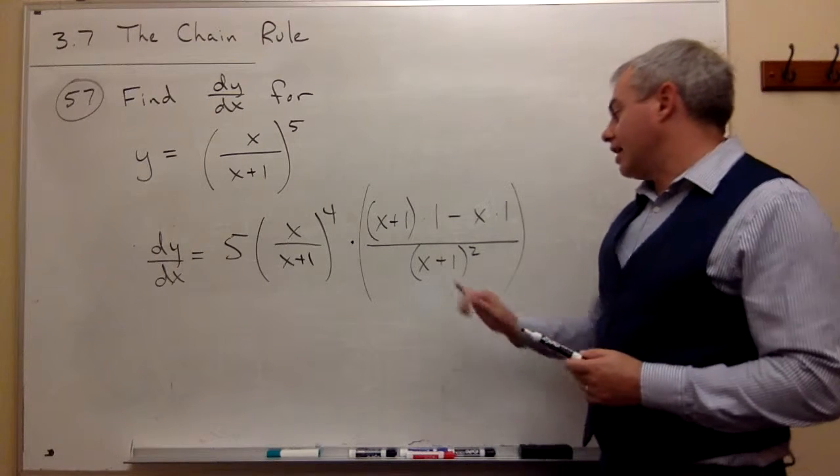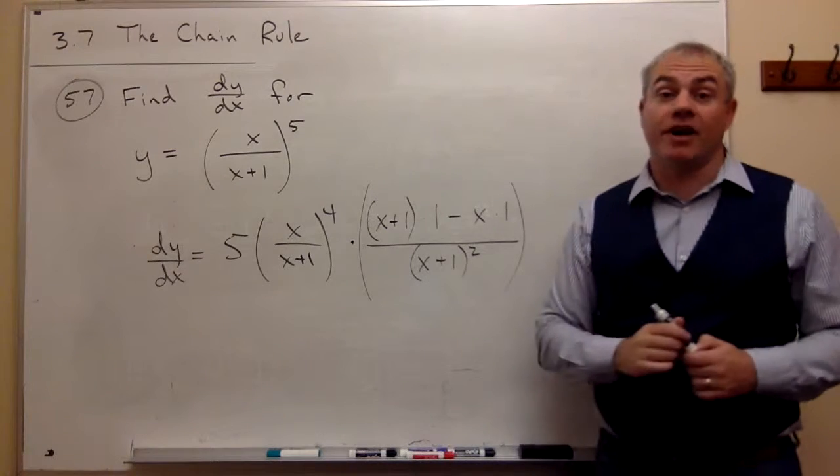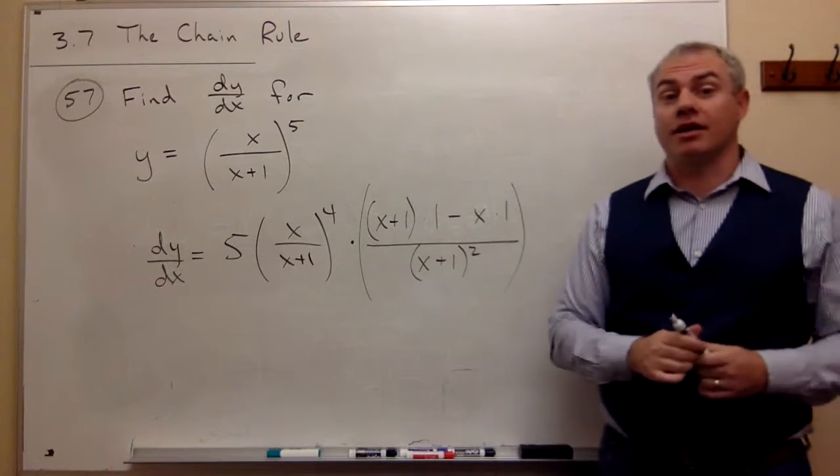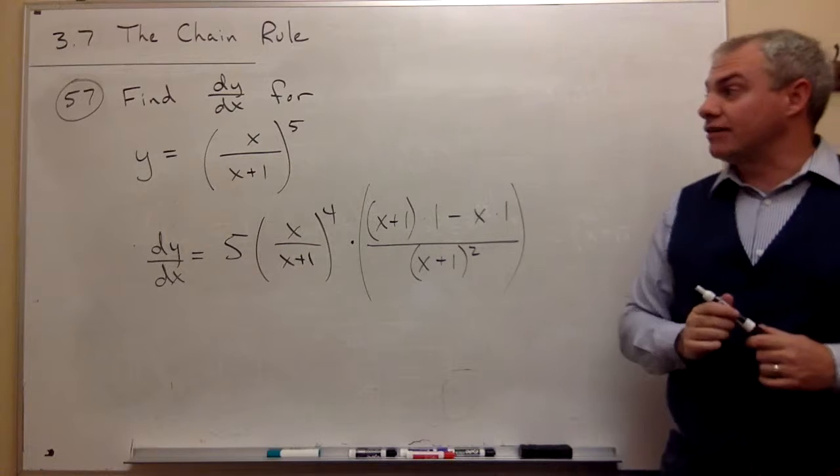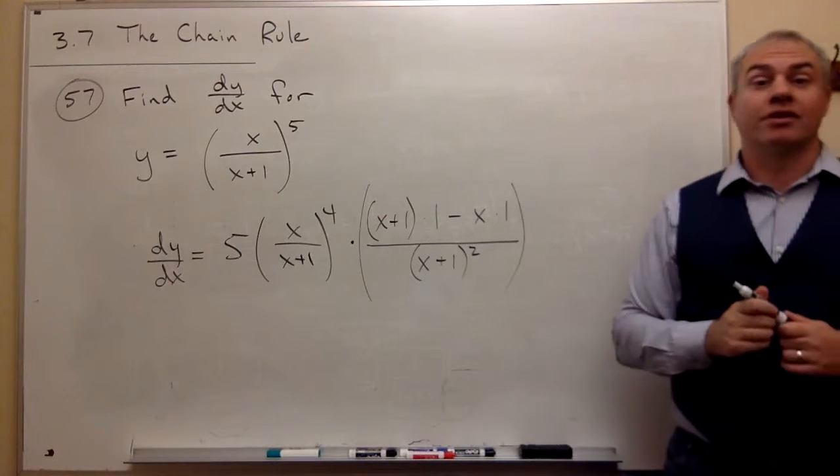And the bottom would be x plus 1 squared. So I could certainly simplify this derivative and make it look a lot cleaner, but this is the derivative, and I used it by using both the chain rule and the quotient rule.